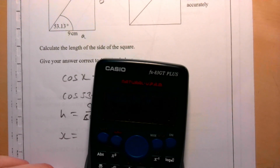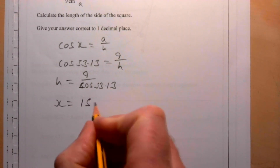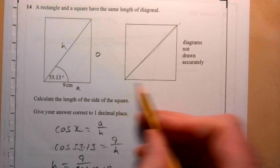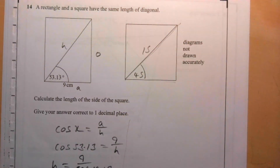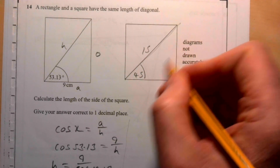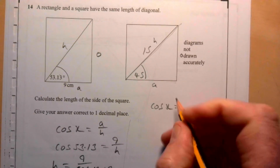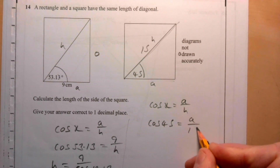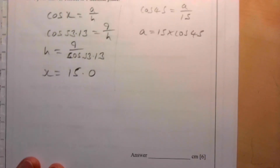That gives h approximately 15.0. Since it's a square, both halves of the diagonal angle are 45 degrees. Using cos 45 equals a over 15, we get a equals 15 times cos 45, which gives 10.6. So the side of the square is 10.6.